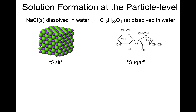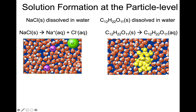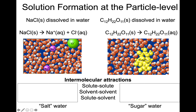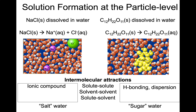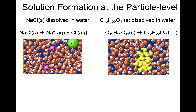Thinking about solution formation at the particle level, there's a difference when talking about something like sodium chloride versus sugar. This is what we saw within the PhET sim moments ago. We have a particle-level description for what's taking place. Let's revisit this in terms of our intermolecular attractions: what kinds of attractions were found in the solute, between the solvent particles, and between the solute and the solvent? For the salt on the left, if the salt is considered the solute, it's an ionic compound. For the sugar, examples include hydrogen bonding and dispersion forces.